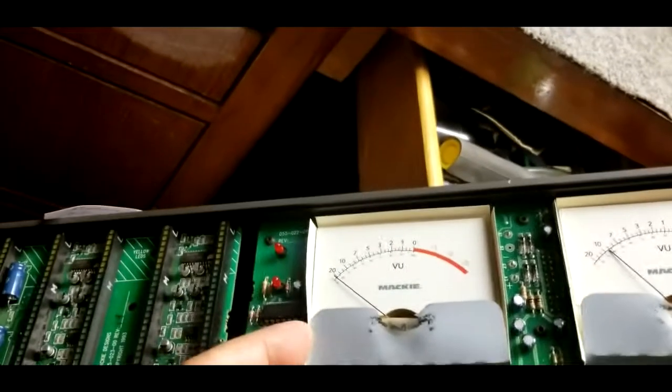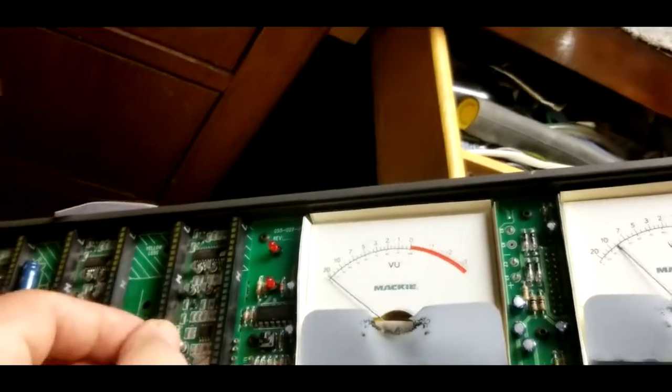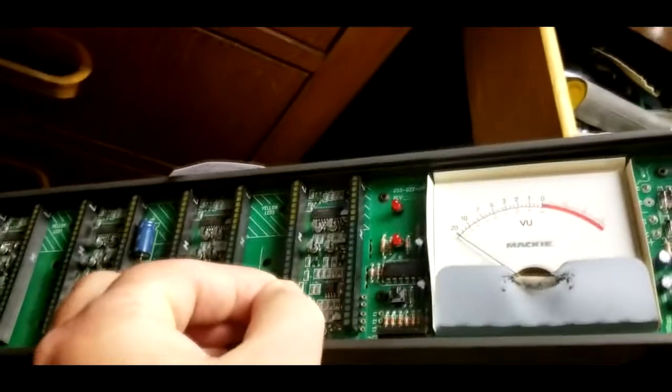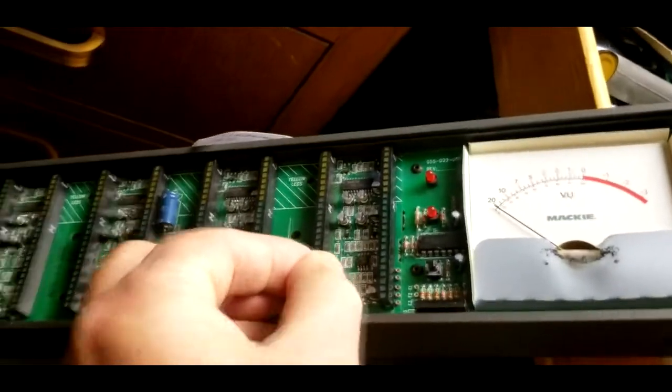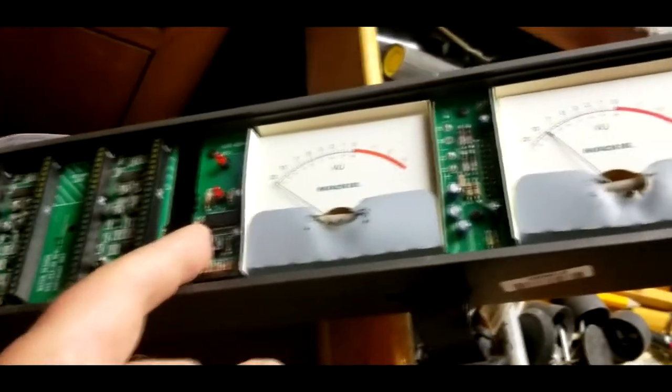And that board comes out. The others are hooked together with little solder jumper wires that hook them together. But this board, the analog meter board, comes out by itself.